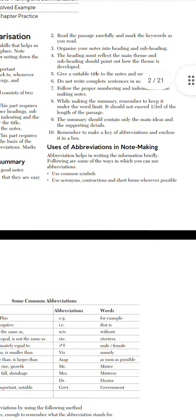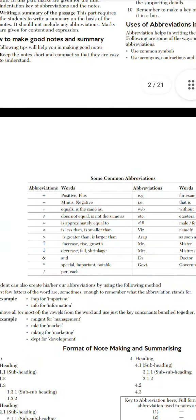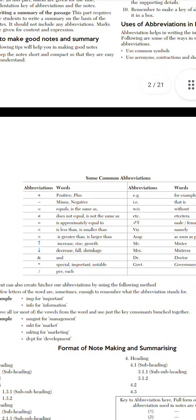Uses of abbreviation in note-making: abbreviation helps in writing the information briefly. Following are some of the ways in which you can use abbreviation. First, you can use common symbols. Second, you can use contractions and short forms wherever possible. Some common abbreviations are shown here.